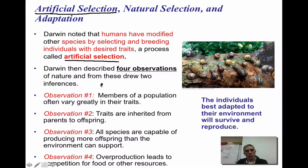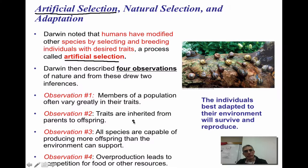Darwin described four observations of nature, from which he drew two inferences. The first observation was that members of a population often vary greatly in their traits. The second was that traits are inherited from parents to offspring — thinking about the work of Gregor Mendel, traits are passed on to future generations. The third observation was that all species are capable of producing more offspring than the environment can actually support, which weeds out individuals that don't have the ability to survive in that environment.